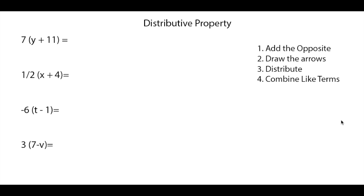Looking at the distributive property, we have four different steps we need to follow. First is to add the opposite — we only need to do this if we have subtraction inside our parentheses instead of addition. Second step is to draw your arrows, which helps us avoid the mistake of not distributing into the second term. Third is to actually distribute your first number into your other two terms. And last is to combine like terms if you can.